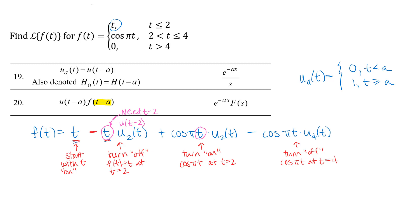The same is true for the next term — I've got a unit step function stepping at t equals 2, so I need the input for that function to be t minus 2. For the last term, the unit step function steps at t equals 4, so I need that t to be t minus 4. To do that, I can subtract the 2s and 4s where needed as long as I add 2s and 4s to balance. The key is making sure your algebra balances so you're not changing the function.